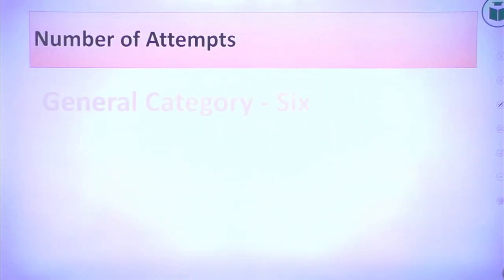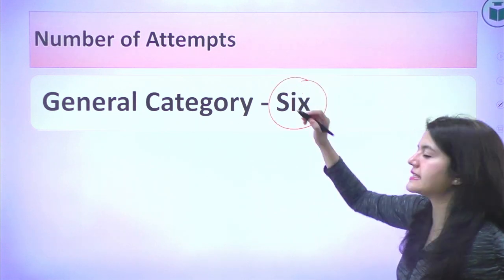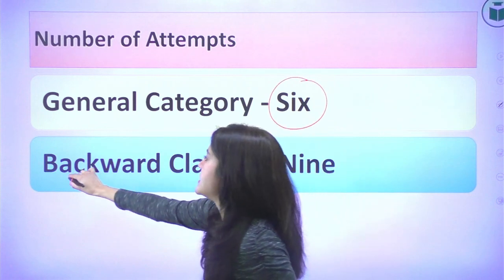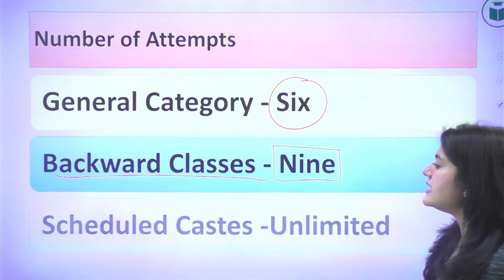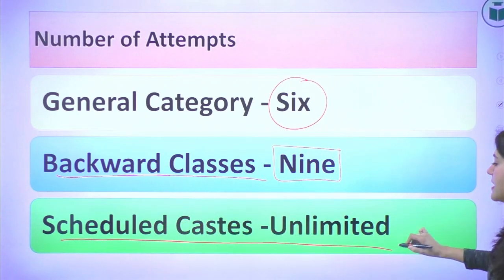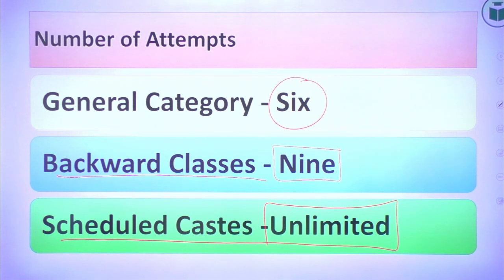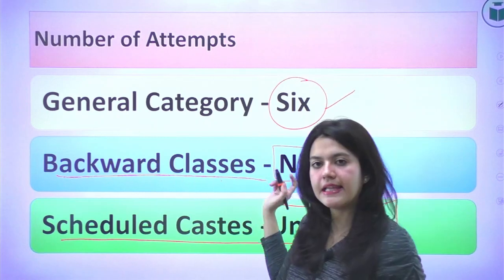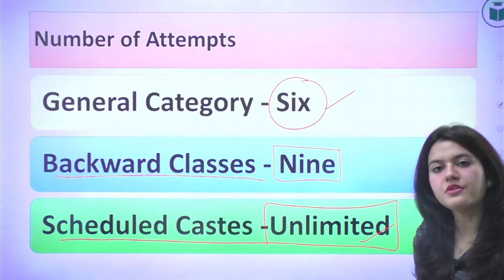Regarding the number of attempts: general category candidates get a maximum of 6 attempts. Backward classes candidates get 9 attempts. Scheduled caste candidates of Punjab get an unlimited number of attempts.